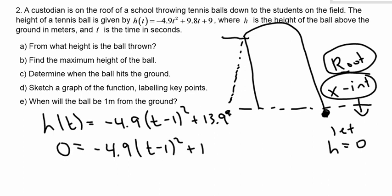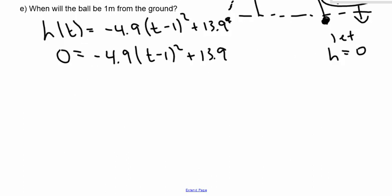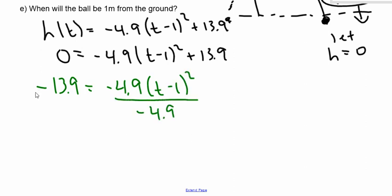This is just now equation solving. The first thing I can get rid of is the positive 13.9. So I'm going to subtract 13.9 from both sides. Now I need to divide both sides by negative 4.9. So I get a positive number, I get 2.84. So 2.84 is t minus 1 squared. And now I need to take the square root.